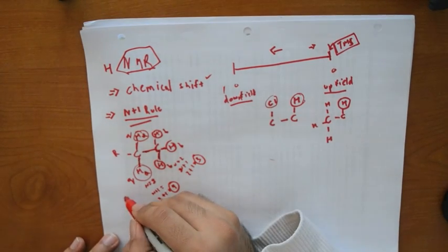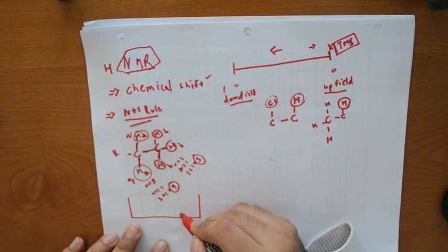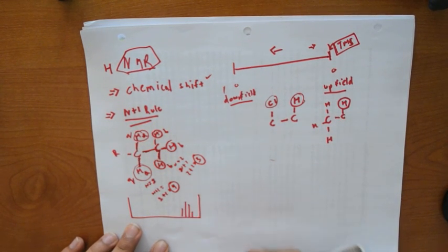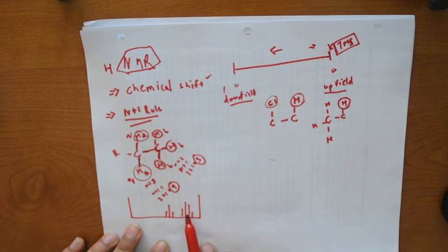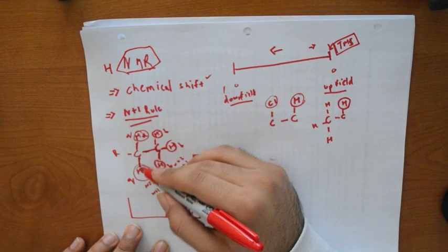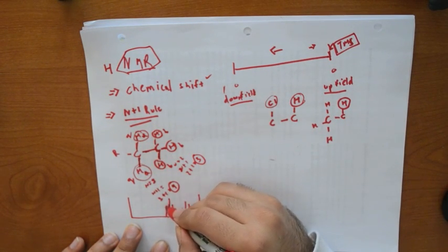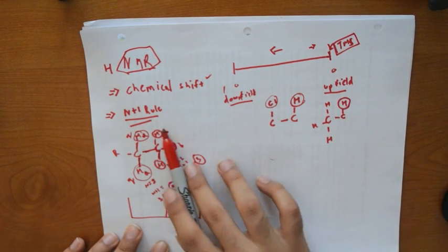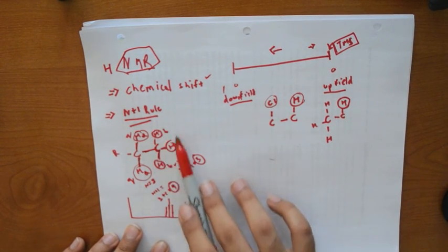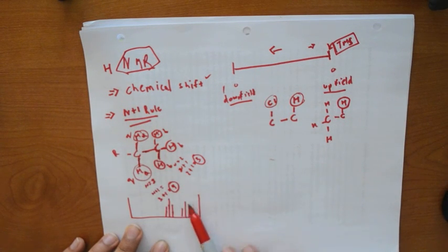On the other hand, for the three equivalent B hydrogens, looking three bonds away we find two hydrogens. So N equals two, and N plus one equals three — a triplet. On the NMR you will see one signal as a quartet representing those two hydrogens, and another signal as a triplet representing those three hydrogens.